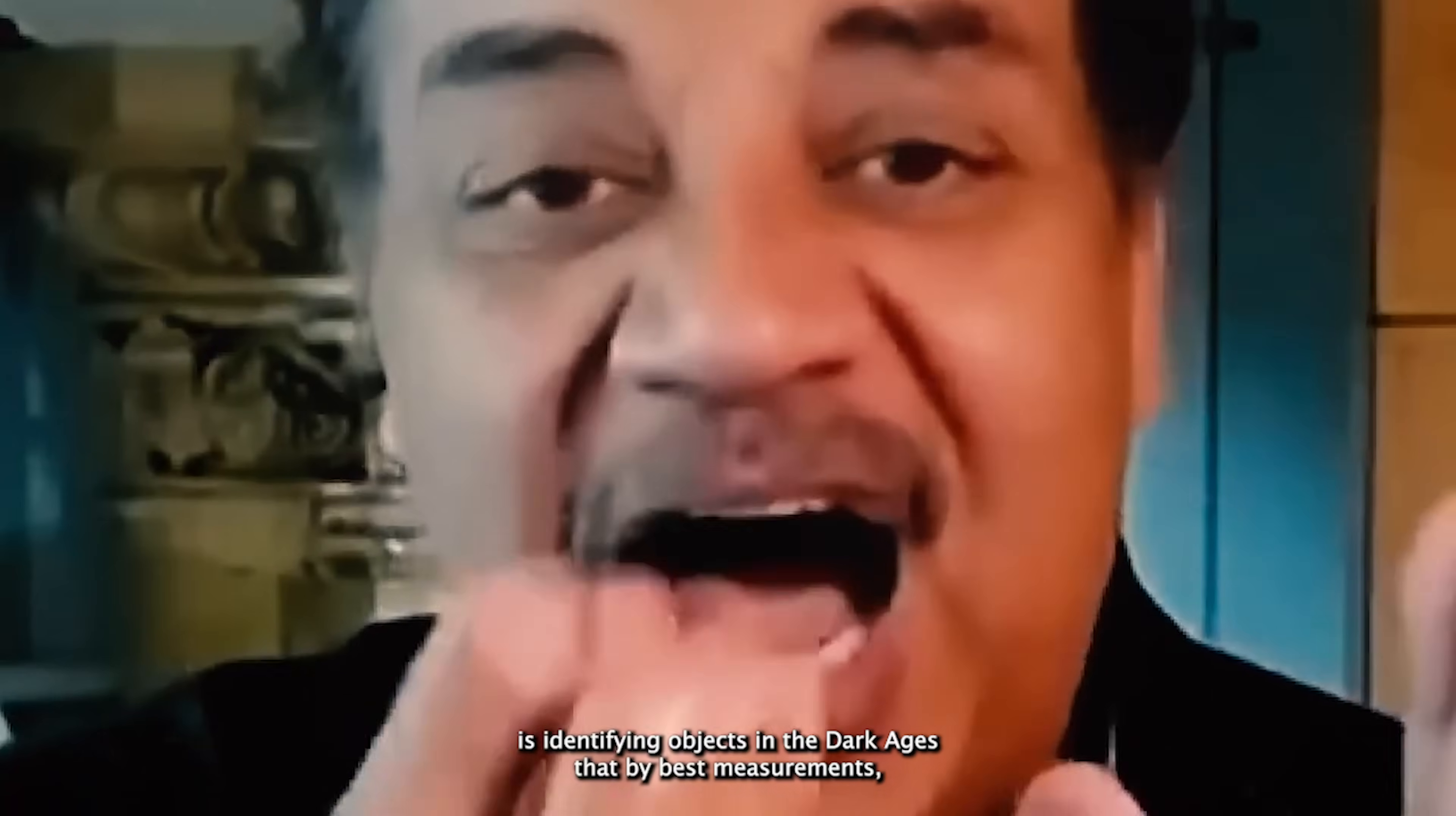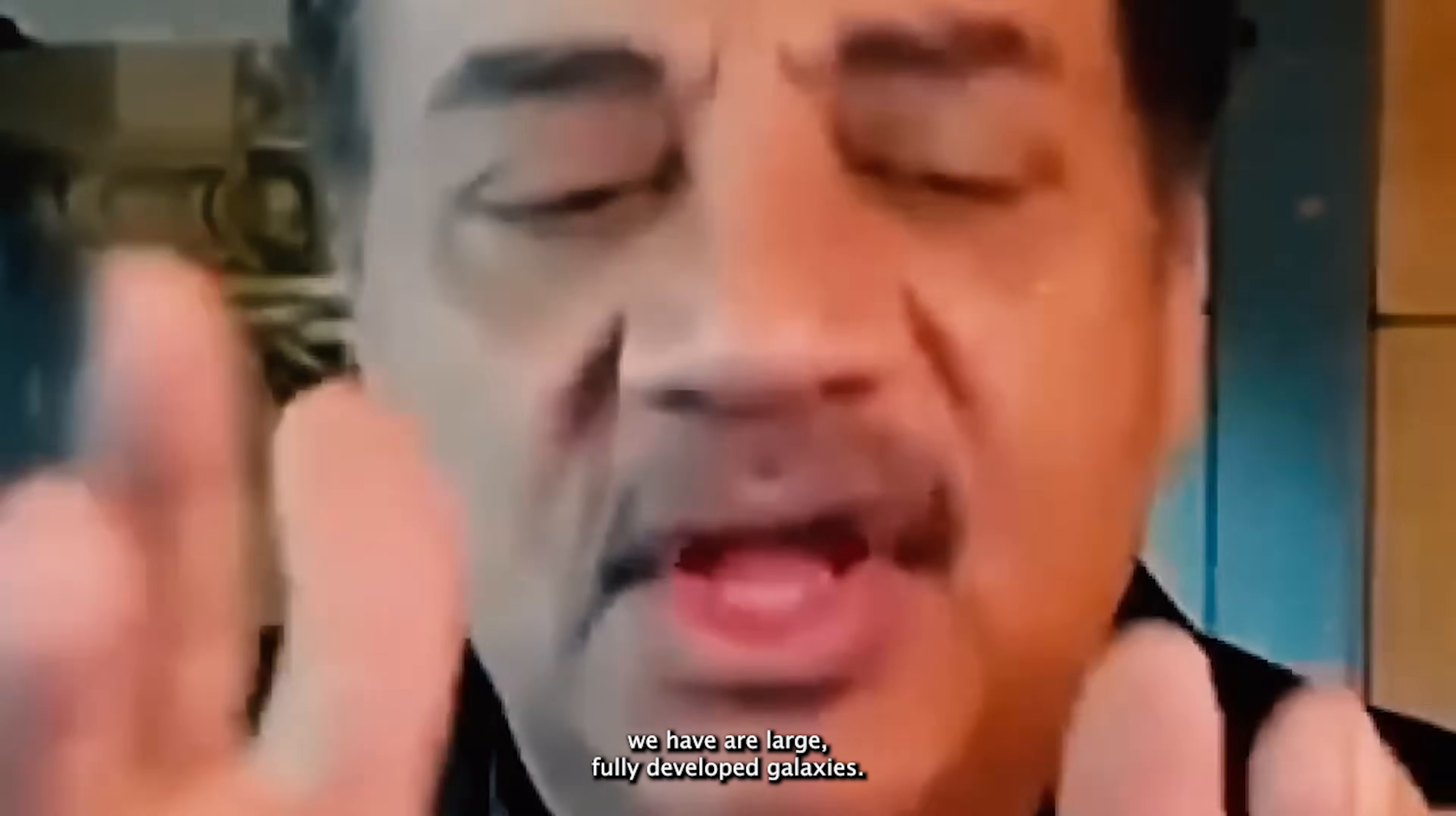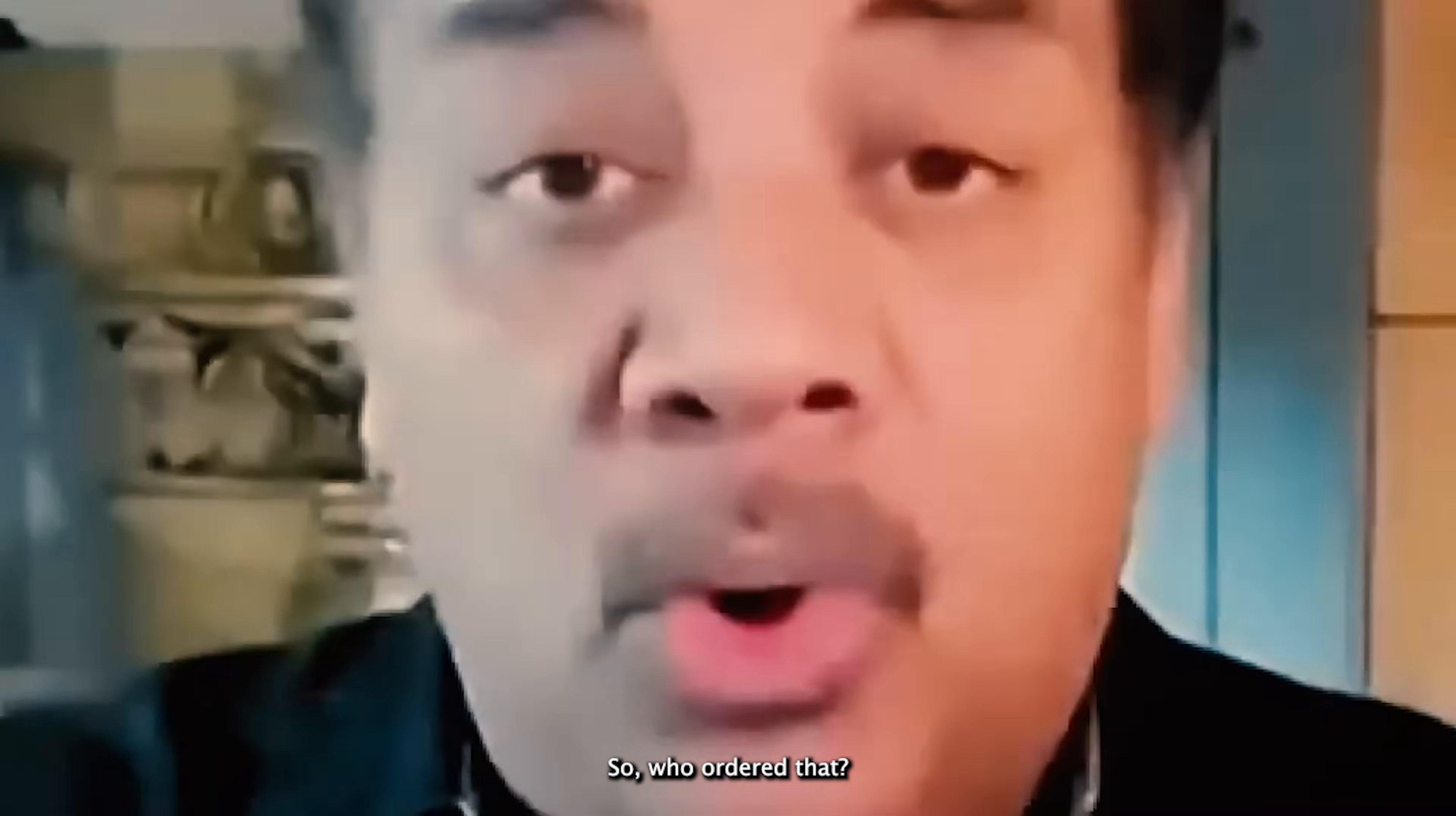And now, the James Webb Space Telescope is identifying objects in the Dark Ages that, by best measurements we have, are large, fully developed galaxies. So, who ordered that?